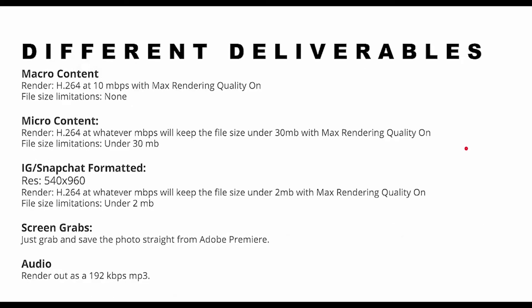So the different types of deliverables for you video editors: macro content — render at H.264 at 10 megabits per second with max rendering quality on, file size limitations none. Micro content — H.264 at whatever megabits per second, as long as it's under 30 megabytes with max rendering quality on. You're good to go because we only upload to the program we use, which only allows for 30 megabytes max.